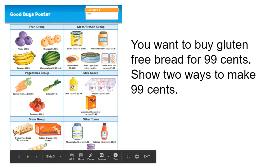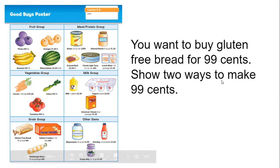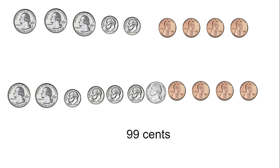All right, let's look at our next one. Now we're going to buy some gluten-free bread — I love that they have gluten-free bread on this poster — and it's going to cost us 99 cents. We're going to show two ways to make 99 cents. This is not a dollar; it is one cent less than a dollar, so you cannot use a dollar bill. Pause the video, come up with two ways, then come back. Here are my two ways: three quarters plus two dimes makes 95, and four pennies makes 99. Another way: two quarters, four dimes to make 90, a nickel to make 95, and four pennies to make 99. You could also do nine dimes, a nickel, and four pennies — so many different ways.